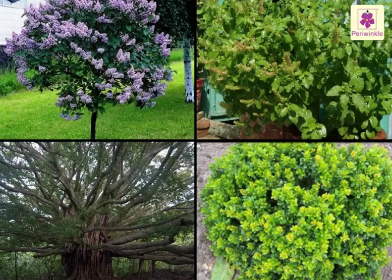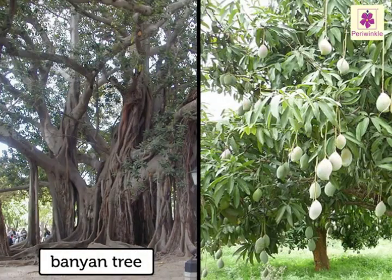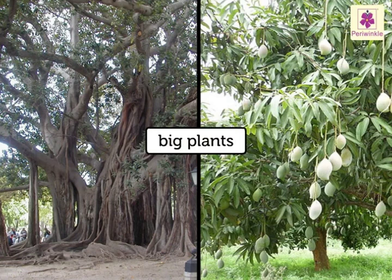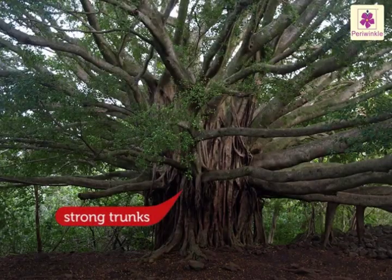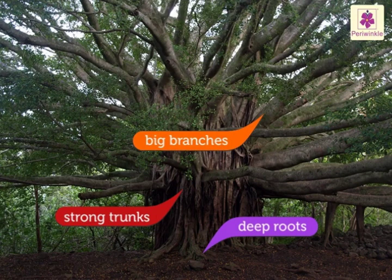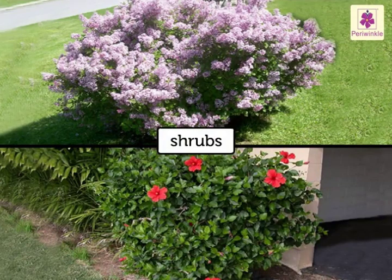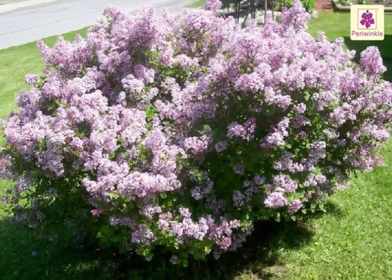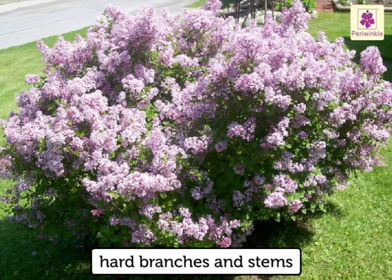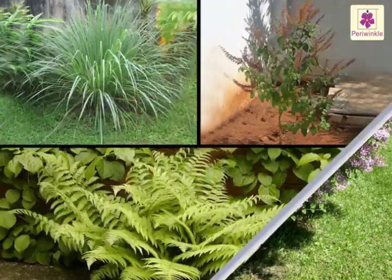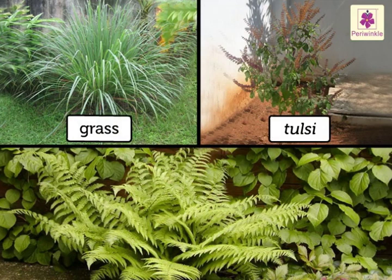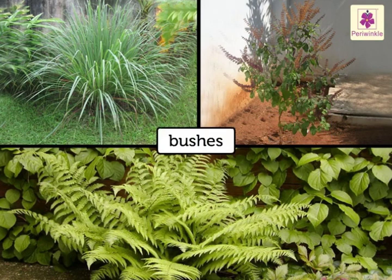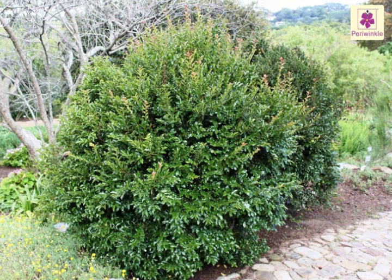According to size, plants are divided into different categories. Trees like the banyan tree and mango tree are big plants that have strong trunks, deep roots, and big branches. Shrubs like lilac and hibiscus are smaller plants that have hard branches and stems. Grass, tulsi, and ferns are bushes that are smaller than shrubs — they grow closer to the ground and have thinner stems.